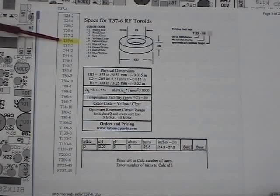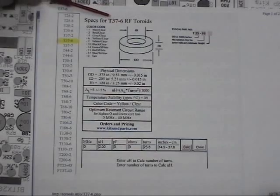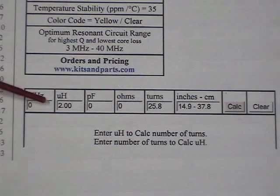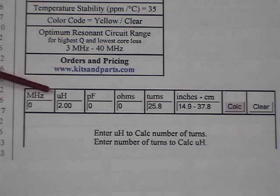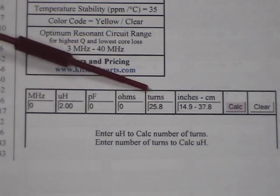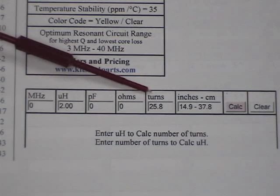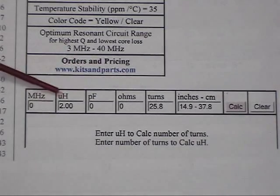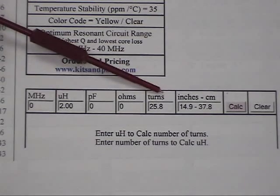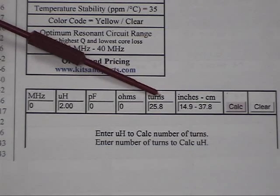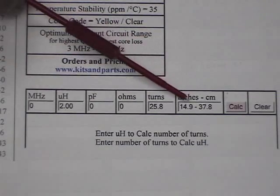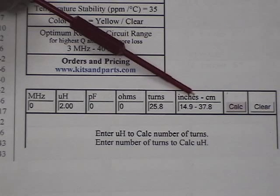Here I've selected for a T37-6 core and here's all the specifications for it. Down here at the bottom of the computer page, we simply enter the inductance we want and hit the calculate button, and it comes out and tells us I need 25.8 turns for a 2 microhenry. Remember on the other one, it showed us that we'd end up with 2.06 microhenrys because we had 26 turns. Well, you can't make 8 tenths of a turn on a coil. You either have to make the whole thing or nothing. Here we're going to use 26 turns and it'll give us 2.08 microhenrys, and it's going to take 14.9 inches of wire.